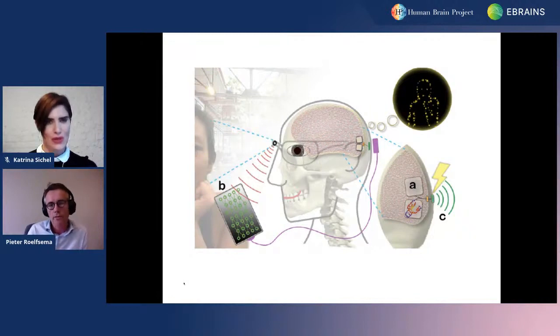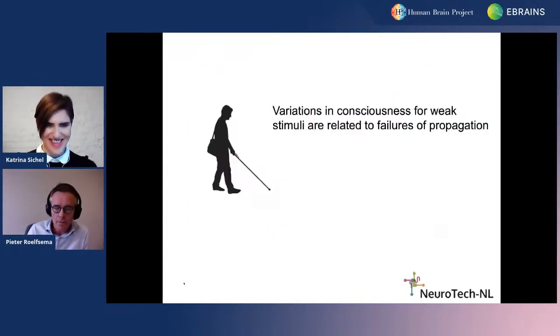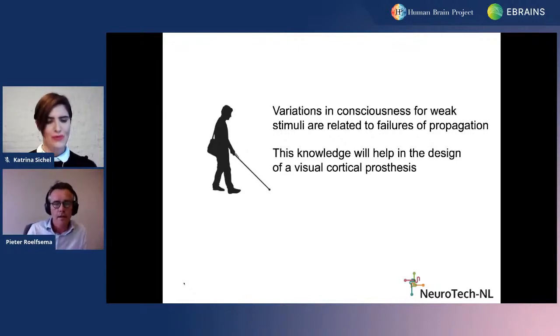This is an important step towards this dream of creating an interface with the visual cortex of blind people. We hope to be able to go into humans in 2023, although don't be too angry at me if we can't make this work. What we demonstrated here is that variations in consciousness of weak stimuli are related to failures of propagation from lower areas to higher areas. This knowledge will help us in the design of a visual cortical prosthesis. I was only giving you time signals because we have so much activity in terms of questions.